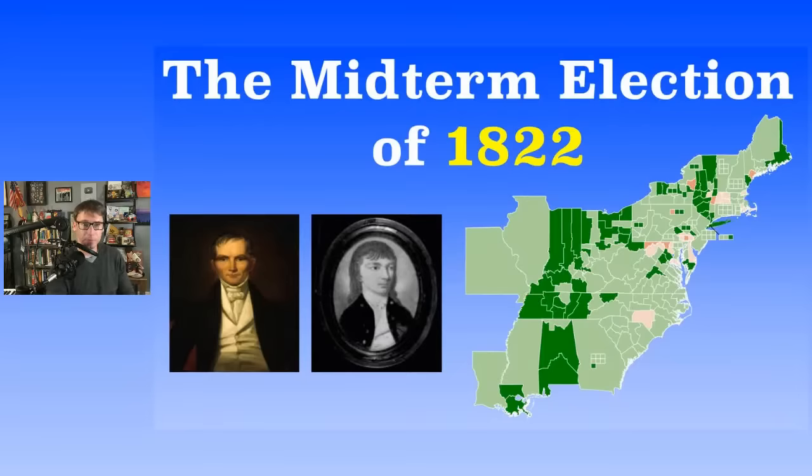The Federalists are dying by this point. In the House of Representatives, there were 213 seats total; 107 were needed for the majority. The Democratic-Republicans gained 34 seats, ending up with 189 out of 213. Federalists lost eight seats, only having 24 after this election.